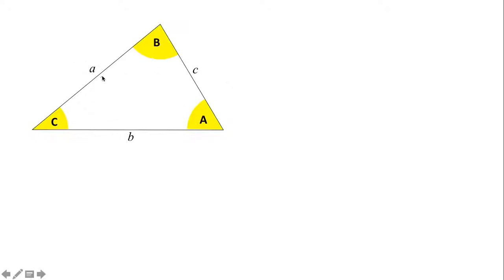As usual, corresponding pairs are opposite to each other, so A is opposite a, B is opposite b, C is opposite c. The way I've set this up, we've got A and C on the bottom angles so that side b is the base of the triangle.